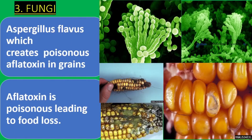The fungus Aspergillus flavus creates a poisonous compound called aflatoxin in grains such as groundnuts and maize. The fungi attacks grains stored with high moisture content.